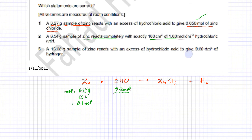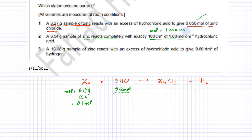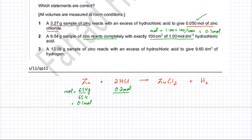We can find the moles of HCl available using the formula: moles equals concentration multiplied by volume. With 100 cm³ of 1 mol per dm³ HCl, we only get 0.1 moles. But according to the ratio in the equation, we need 0.2 moles of HCl. Therefore, a complete reaction is not possible in option number 2, making the statement that zinc reacts completely an incorrect option.